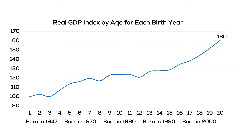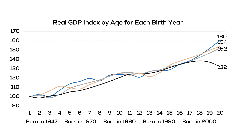The 1947 birth group ended their 20-year period at an index of 160. The 1970 cohort ended slightly lower at 154, and 1980 ended at 152. Starting with the 1990 cohort, we see a change: the 1990 cohort's GDP index grew to 132, and the 2000 cohort ended at 125. This indicates that U.S. GDP growth rates have been decreasing over the past 60 years.